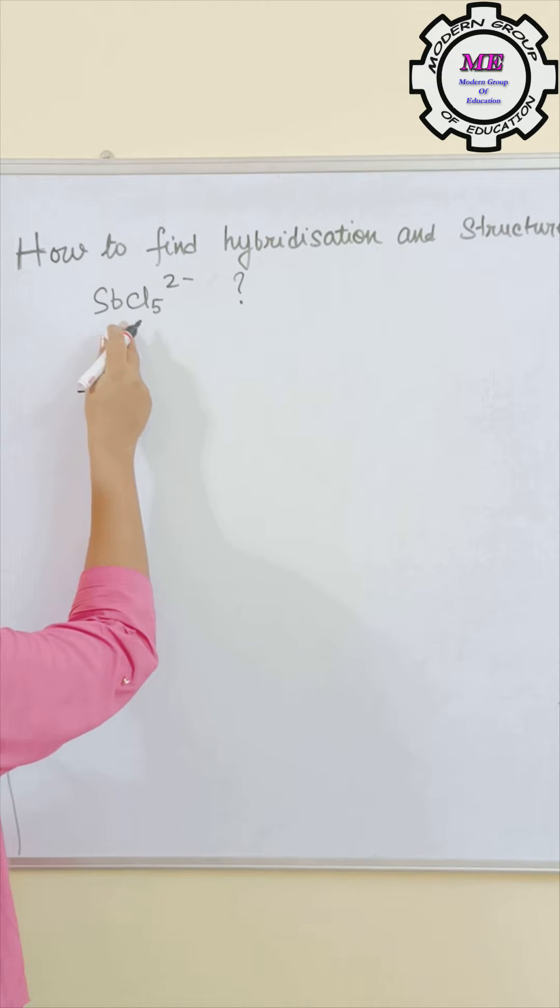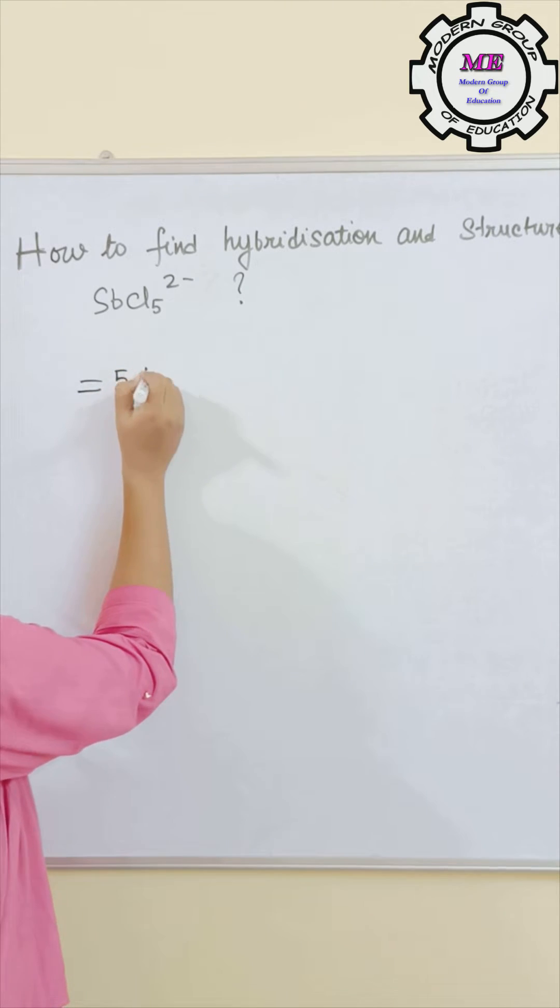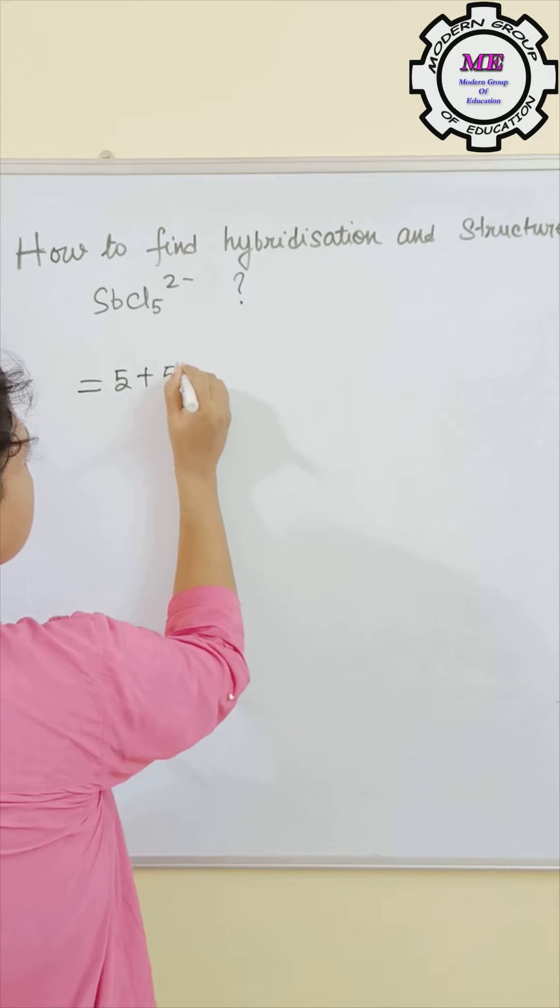For that you have to know the valence electrons of Sb. It belongs to group 15. So for that you have to take 5 electrons as a valence electron and there are 5 chlorines.